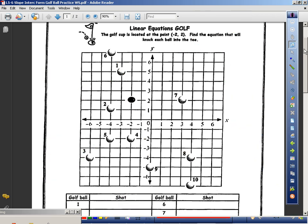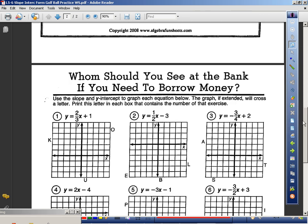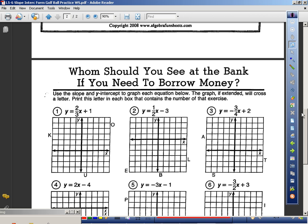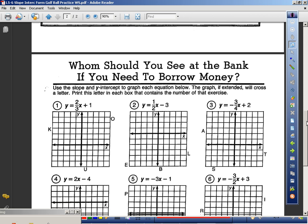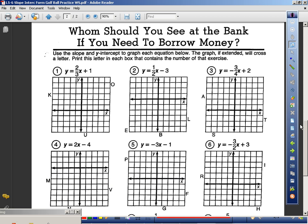back side, whoops, to graph each equation. The graph, if extended, will cross a letter. Print the letter in each box that contains the number of that exercise.